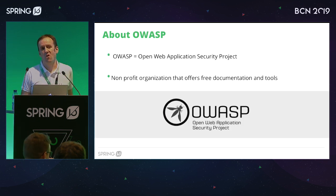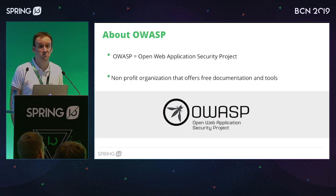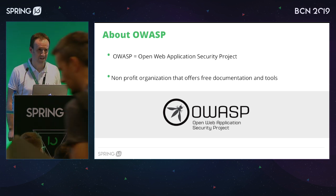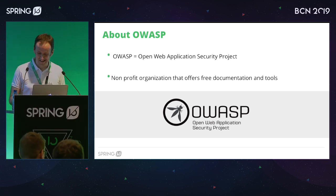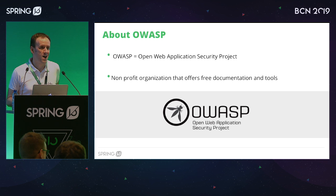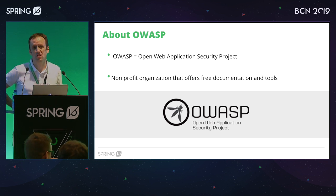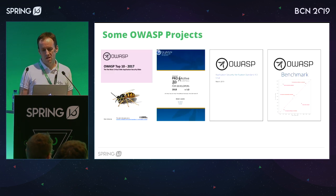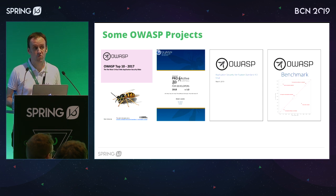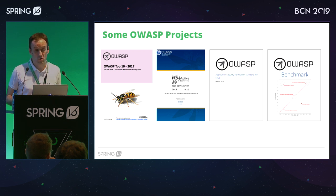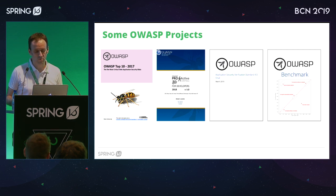First of all, about OWASP — I don't know how many of you know about it, but probably most of you. It's a free and open source organization that offers tools and documentation with many resources. Today we are going to review four projects from OWASP, at least an overview of each specification, because we don't have time to review all of them in detail. We will try to explain the differences between specifications and what would be a good path to create secure applications.